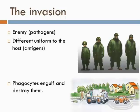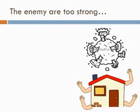Phagocytes are our patrol team that drive around on the roads, making sure no one unwanted is getting in. They immediately recognise that this uniform isn't the one that should be there, and so they engulf them and destroy them in their little clean-up trucks. However, in an infection, the enemy are too strong — there are too many of them for the phagocytes to clear up. So the fighting begins.